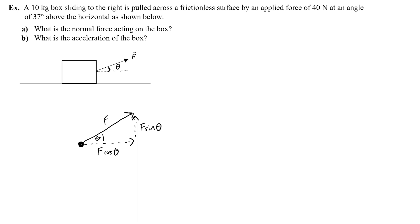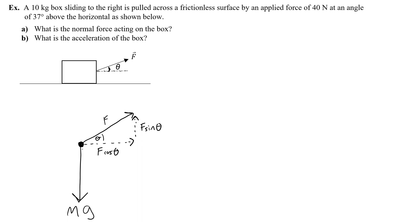The next thing is to consider the other forces acting on the box. There is a weight force acting downward, so I draw the weight — I'll make it fairly large, at least bigger than the sine component. I'll write the weight as m times g. Remember that mass times acceleration due to gravity is the weight of the object.